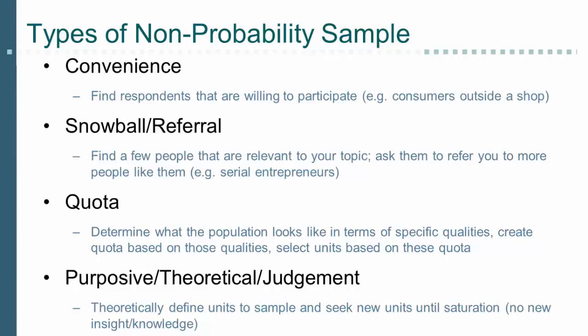Purposeful, judgment, or theoretical sampling occurs when elements of the population are specifically chosen based on the judgment of the researcher. A purposive sample can consist of elements judged to be typical of the population or of only extreme elements. For example, you might purposely sample only failing enterprises to see what they have in common. Elements can also be purposely chosen because they are very much alike, or conversely because they are very different — for example, sampling best versus worst performing farms to get an idea of the range of values in the population.